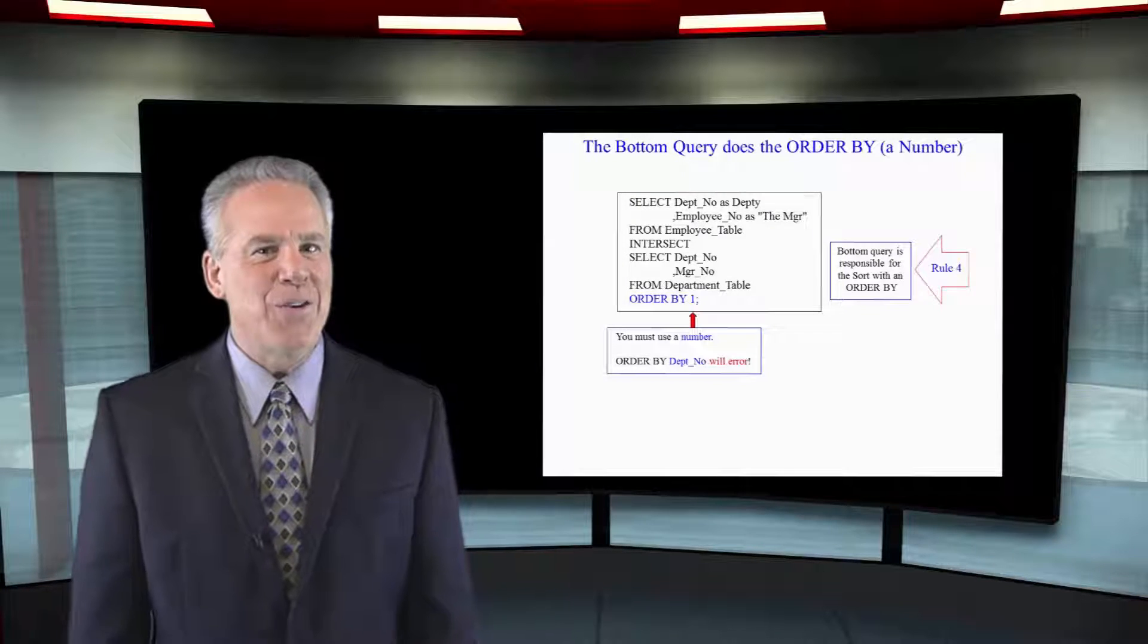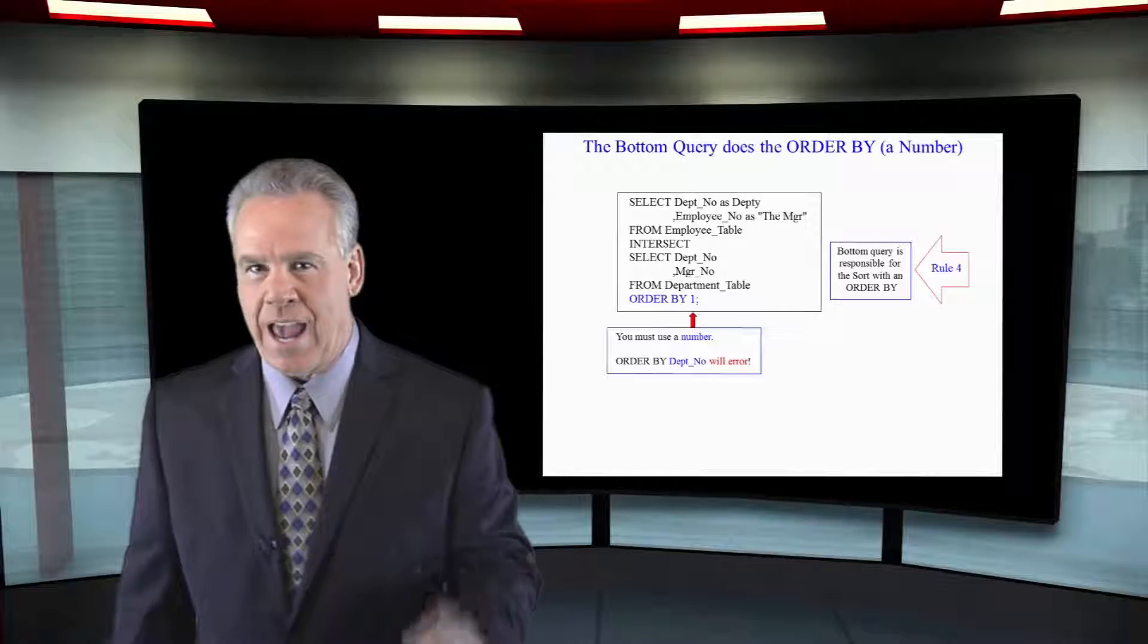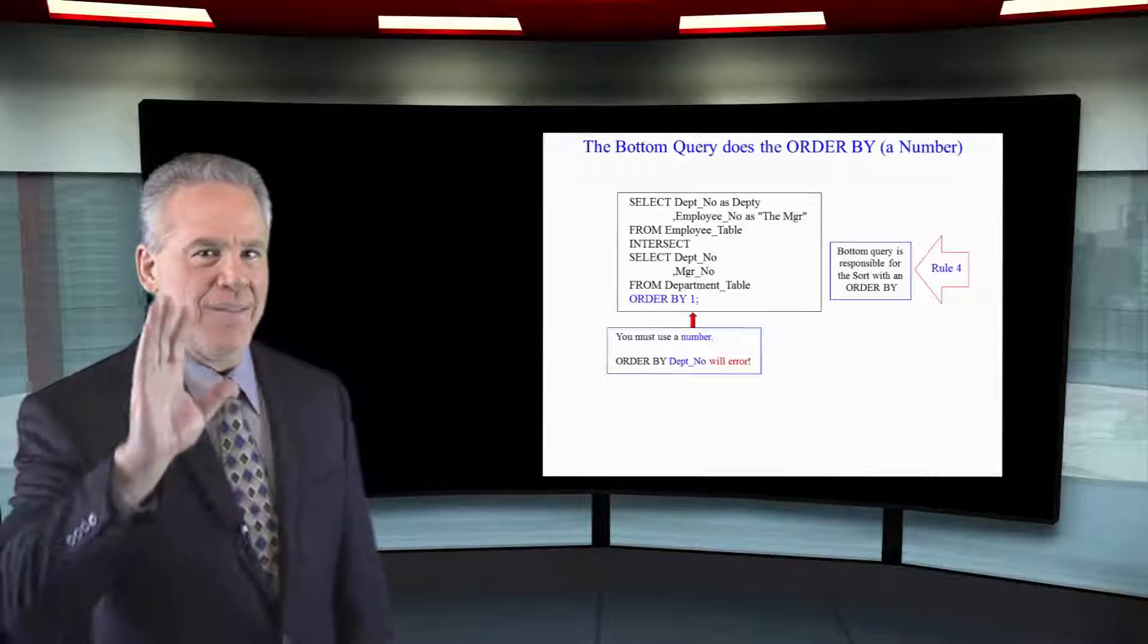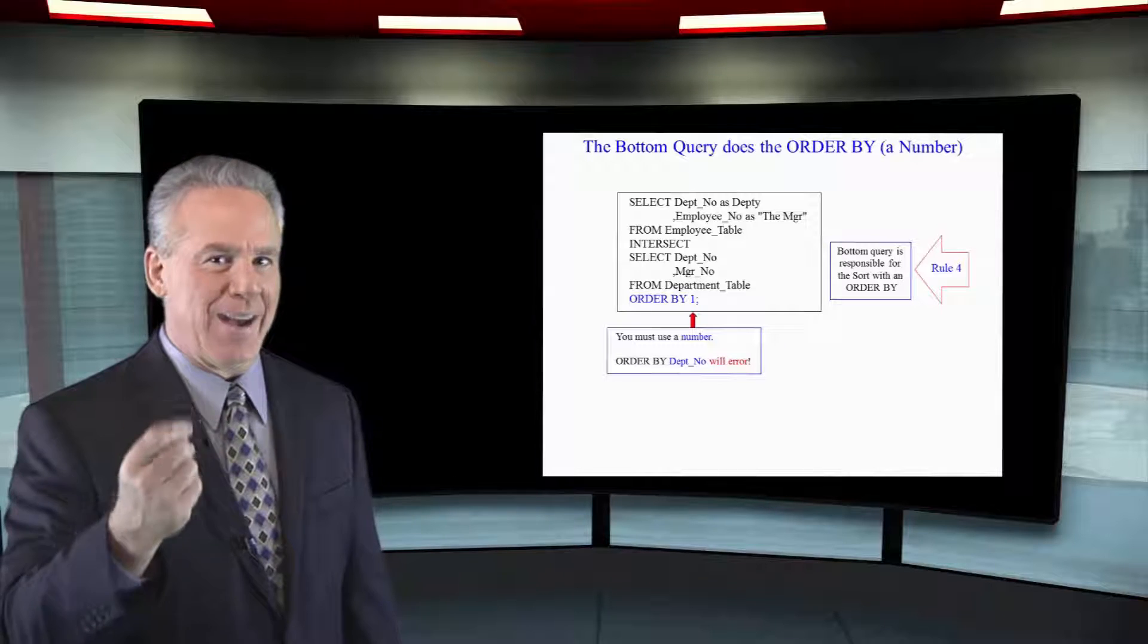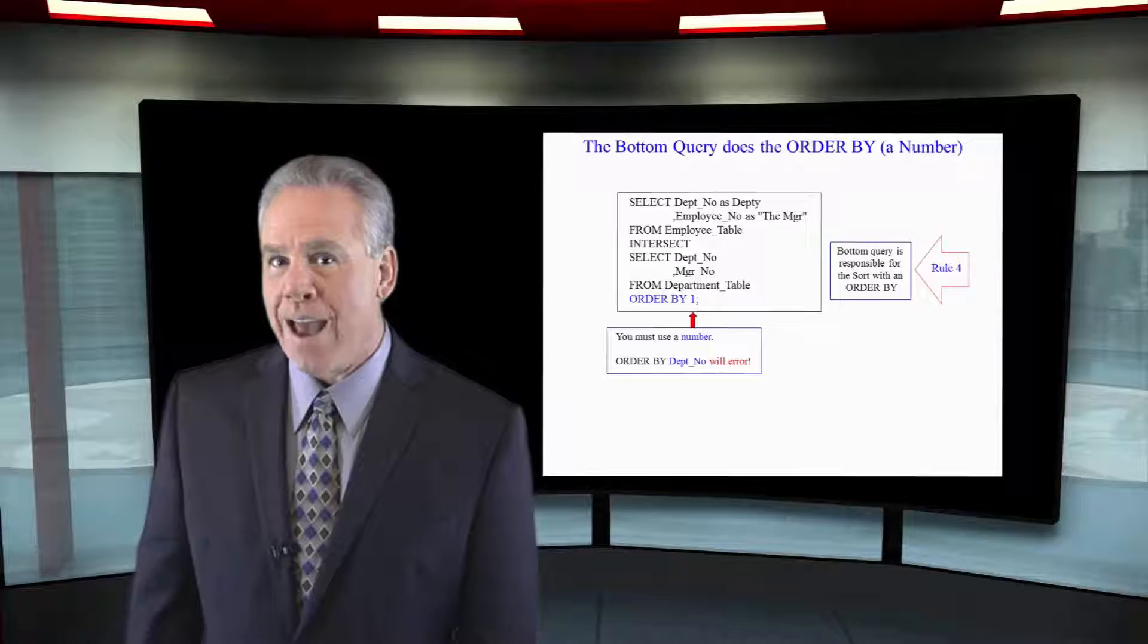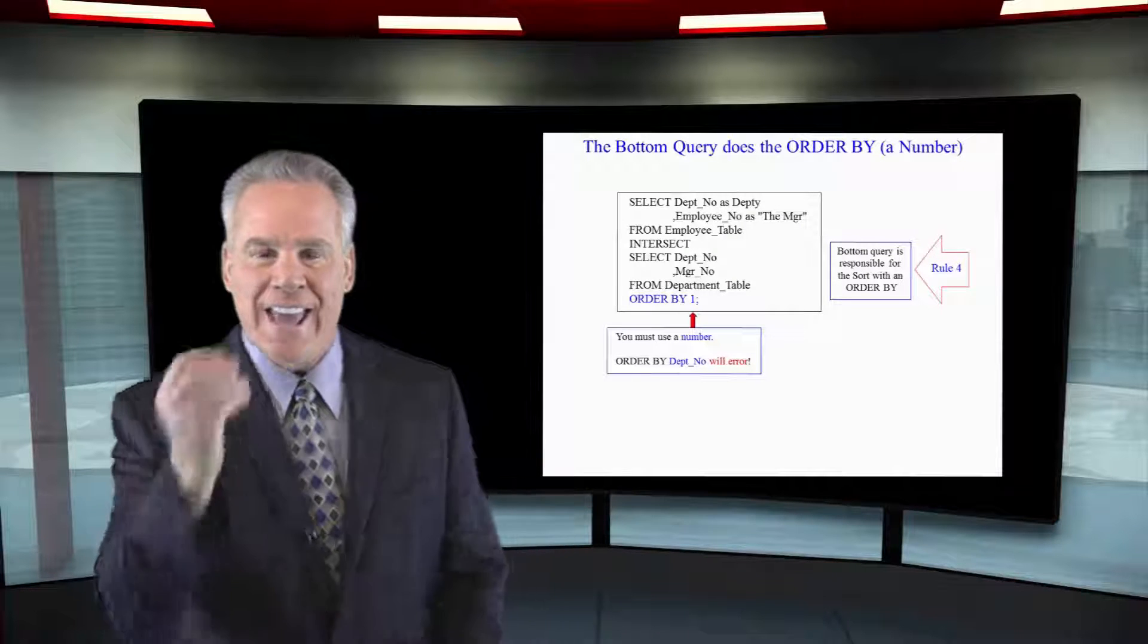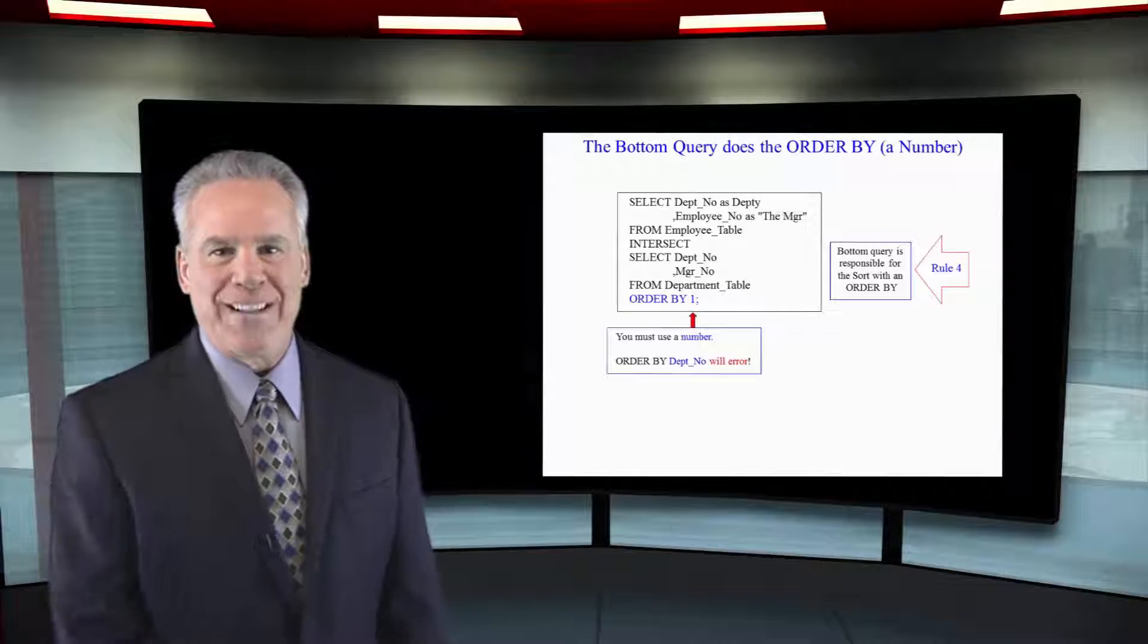Here's another rule. All sorting, order by statements, have to be done in the very bottom query when you're dealing with set operators. And you have to use the number. I cannot say order by Depno or order by Depte. I've got to say order by one. No ifs, ands, or buts about it. You have to use the column number in the order by statement.